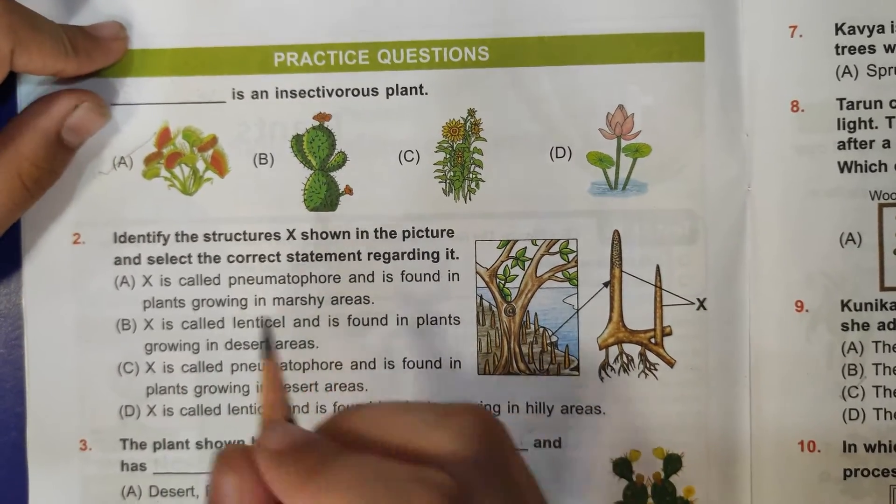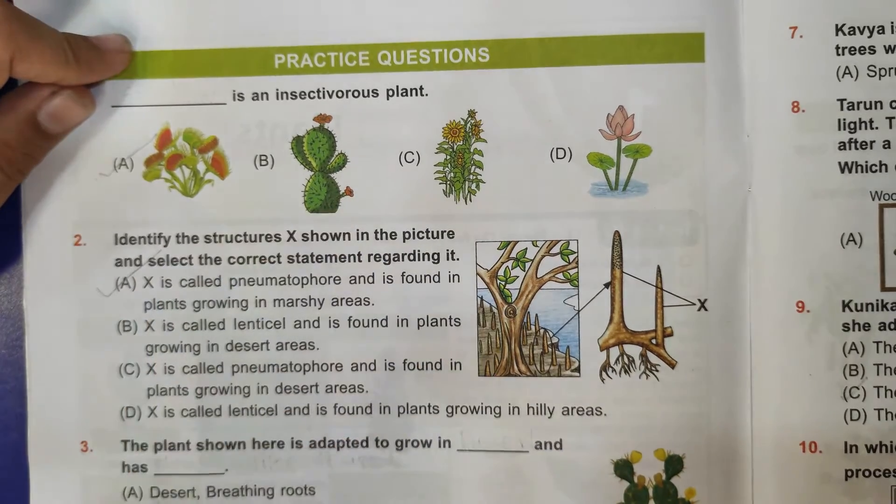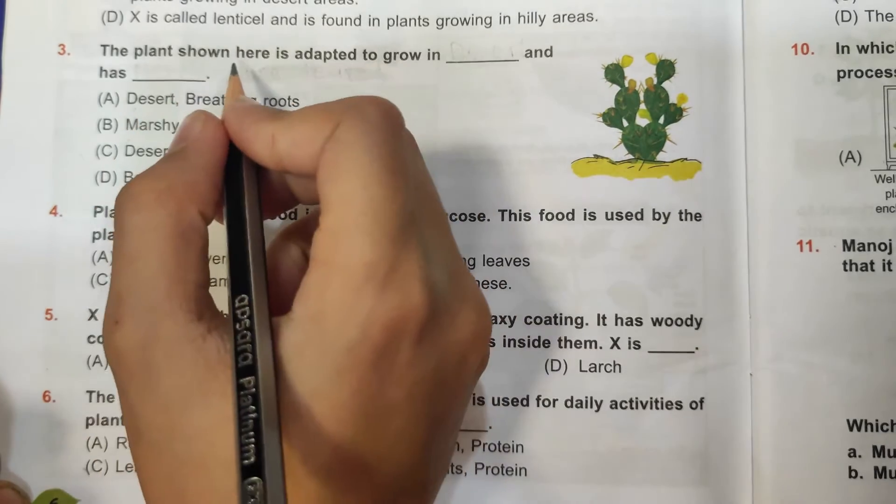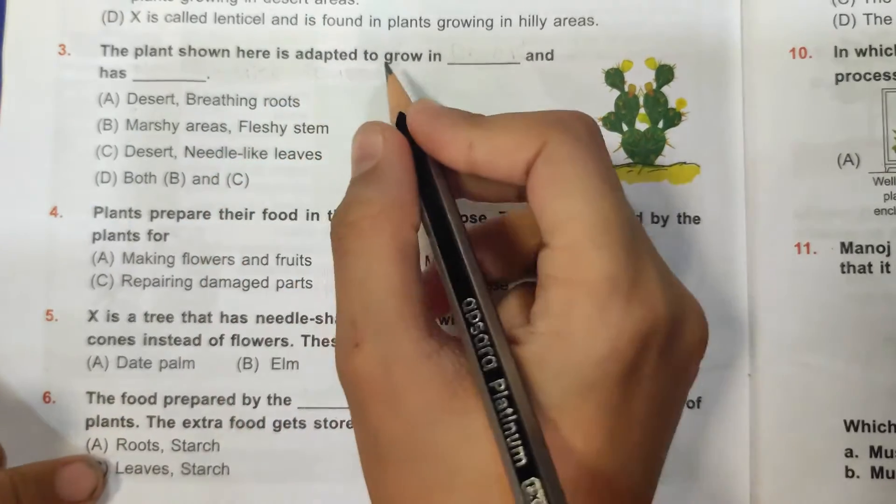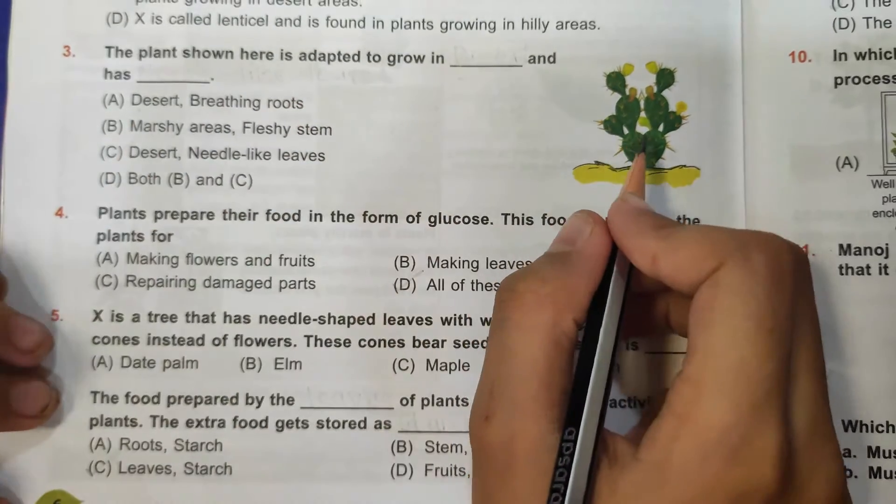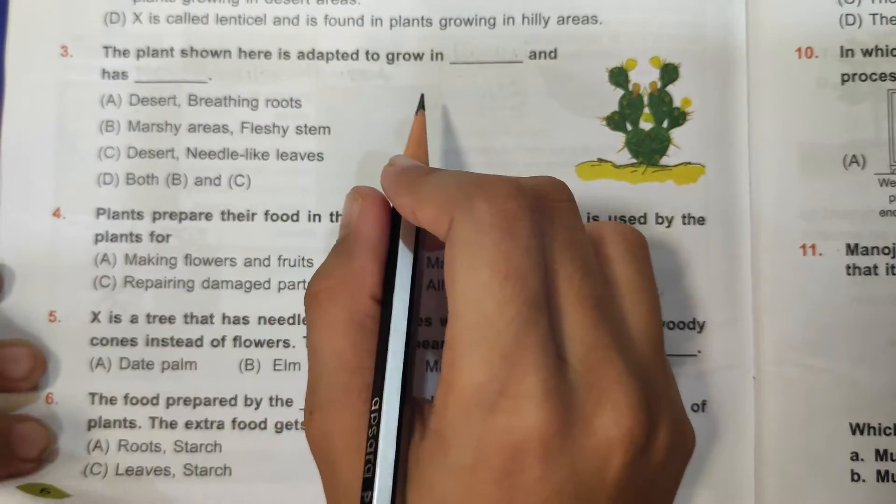Third question: the plant shown here is adapted to grow in dash and has dash. So this is cactus and it is adapted to grow in desert and has needle-like leaves, so C is the correct answer.